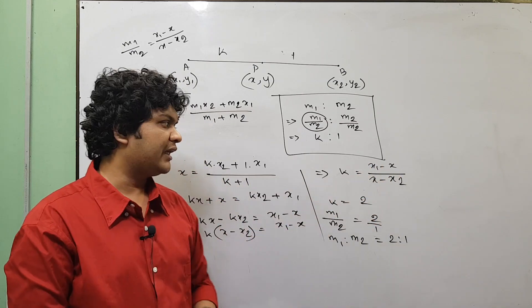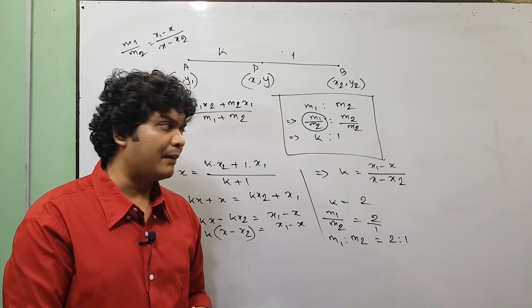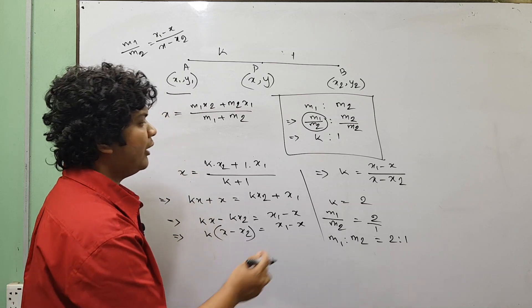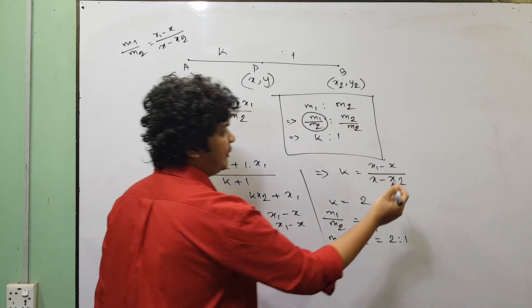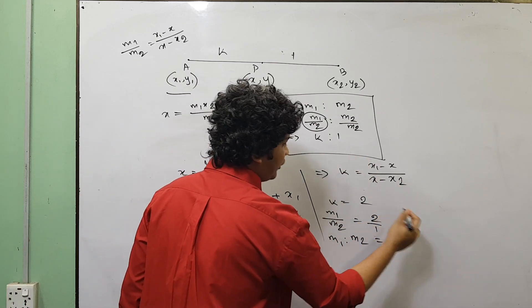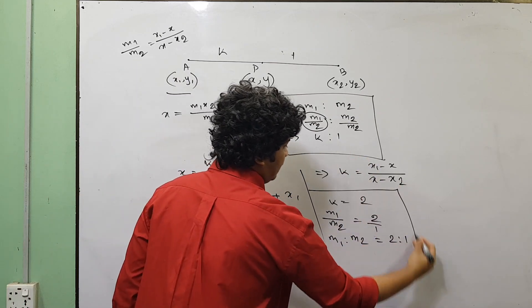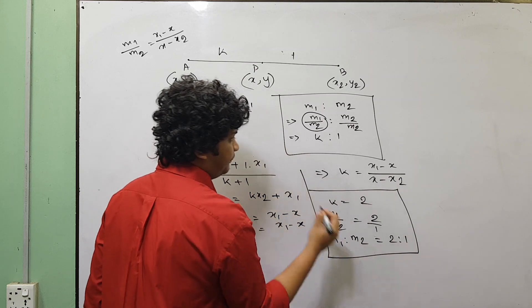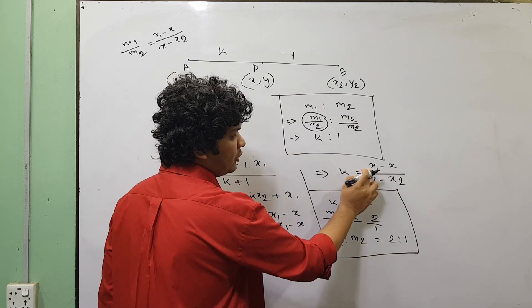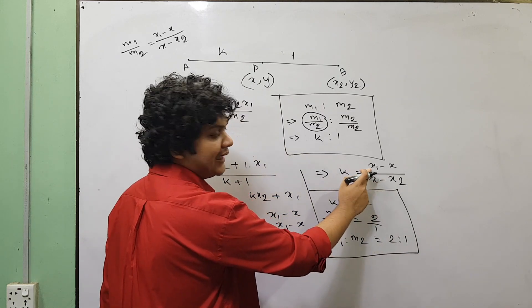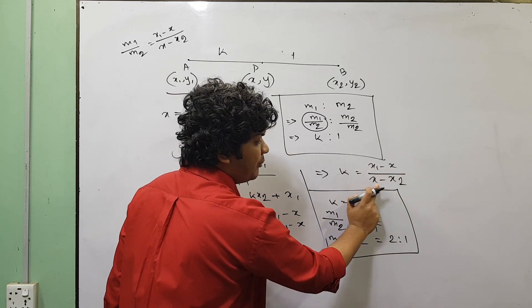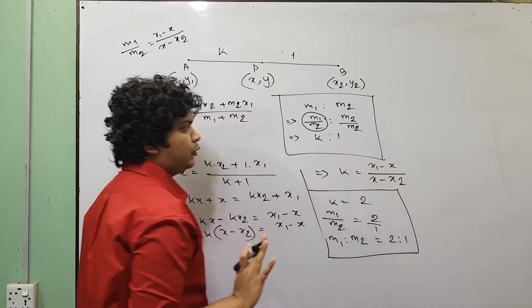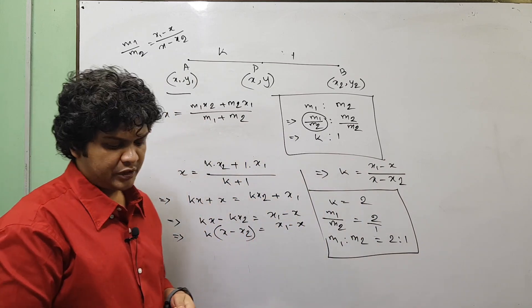This x is a common factor, as y is a common factor. The y-coordinate formula follows similarly: y1 minus y divided by y minus y2.